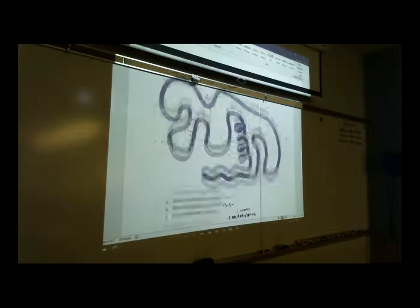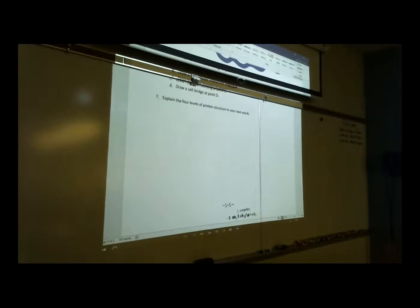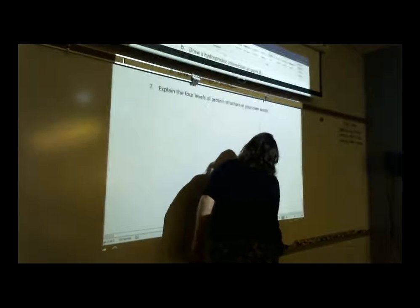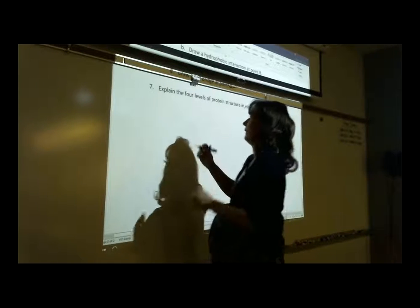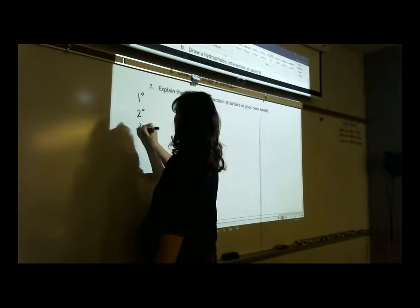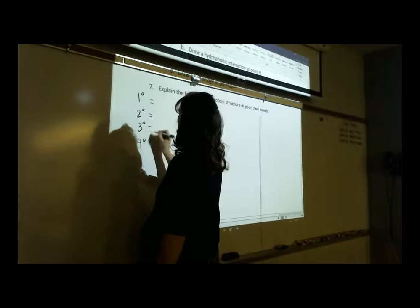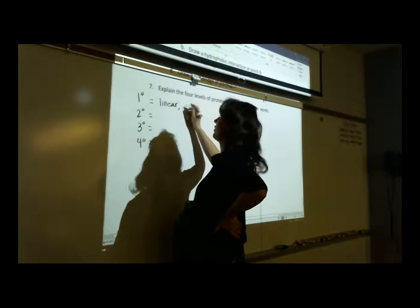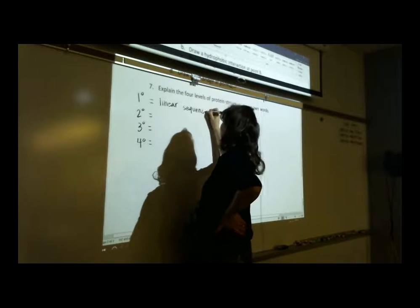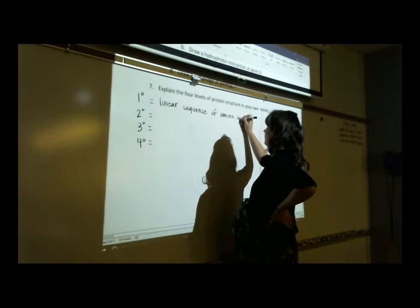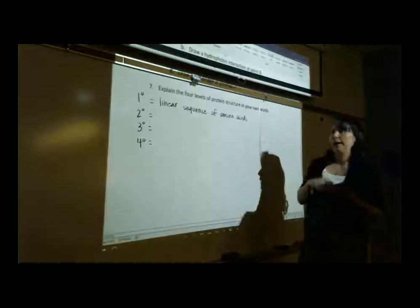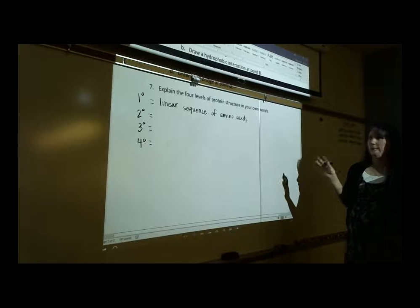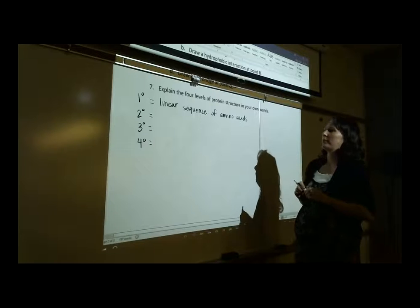And then last, explain the four levels of protein structure in your own words. So no drawing involved there. So there are four levels of protein structure. What are they? Primary, secondary, tertiary, and quaternary. So what's primary? Just a linear chain. It's just the linear sequence, right? Of amino acids. So it's literally just listing alanine, glutamine, asparagine, right? You're just listing them. Just listing them out. Right? No biological activity at primary structure. What's secondary structure?